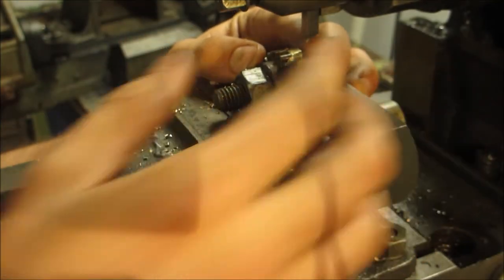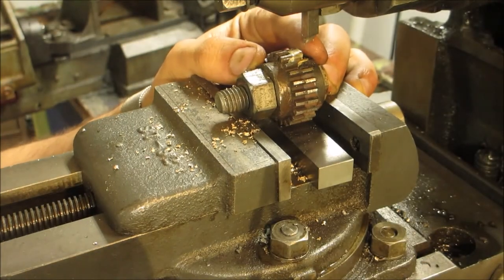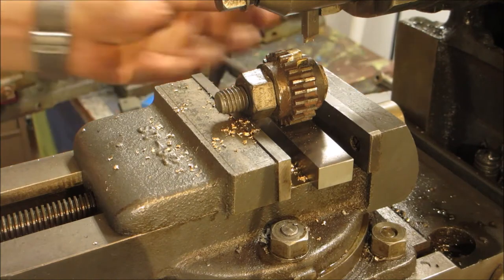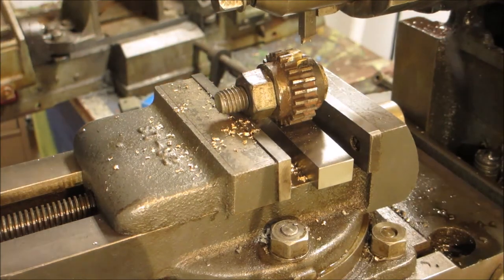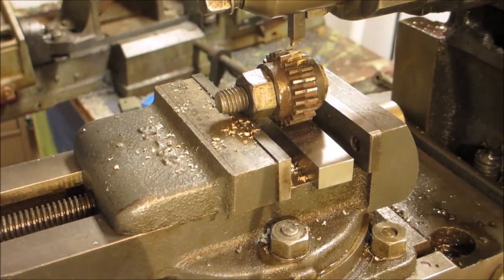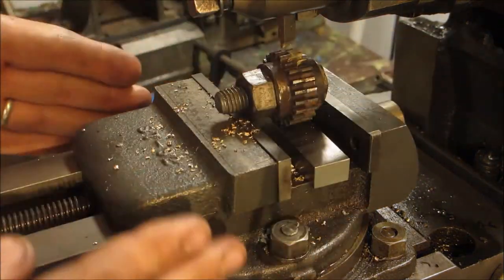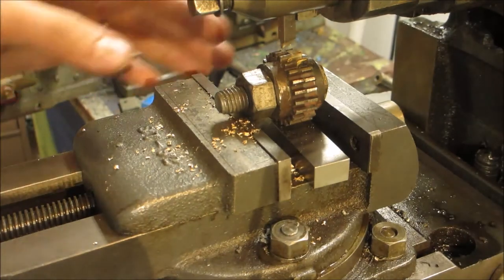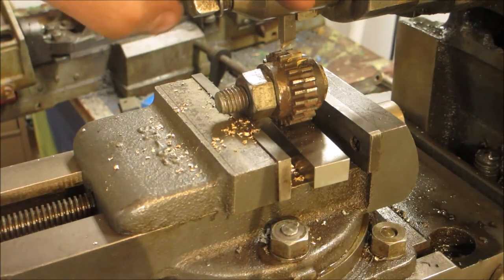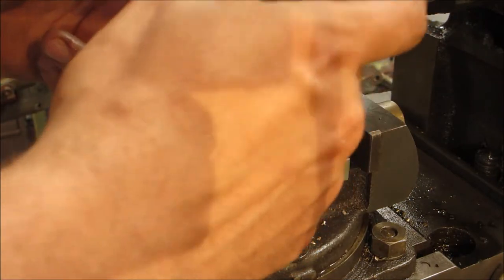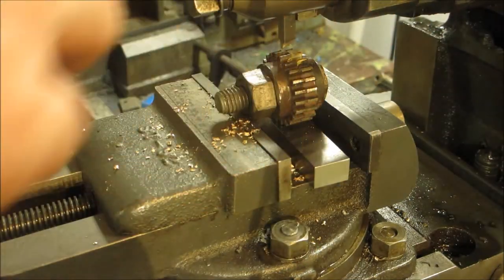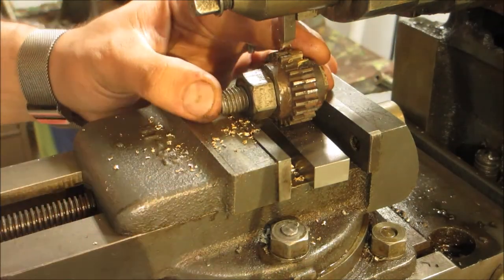So the way I did this to index this... Now I used the square and indicator to make sure the device was trammed in, and then I put a square in to make sure that the bit actually comes down square.